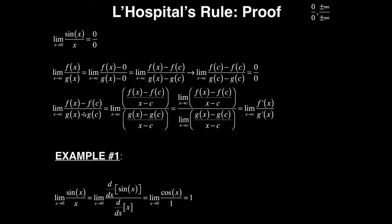Now I'm going to divide both the numerator and the denominator by (x minus c). In the numerator I now have f(x) minus f(c) divided by (x minus c), and in the denominator I have g(x) minus g(c) divided by (x minus c). Because I did the same thing to both the numerator and denominator, I didn't change this limit's value. Because I'm taking the limit of a quotient of two expressions, I can put the limit on both of these separately instead of having one big outer limit.